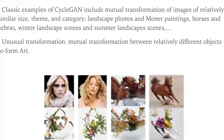In a classic example of CycleGAN, the generator models were used to make mutual transformations between horse and zebra, or landscape photos and Monet paintings. This means the transformation was made between images of similar objects — similar in theme — so the obtained results are not very interesting in terms of art. This means that at this stage, AI does not have the capability of genuine art creation.